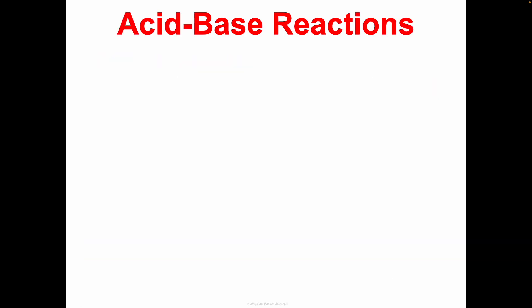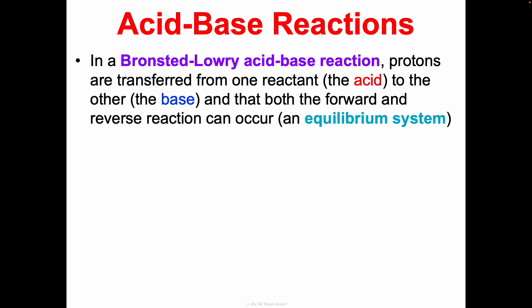Now, something I want to teach you honor students — I need to do a little refresher from concept one. In concept one I introduced the Brønsted-Lowry theory of acids and bases. In a Brønsted-Lowry acid-base reaction, protons get transferred from one reactant — the acid, which is the proton donor — to the other, which is the base, the proton acceptor. Both the forward and the reverse reaction can occur if this is an equilibrium system.